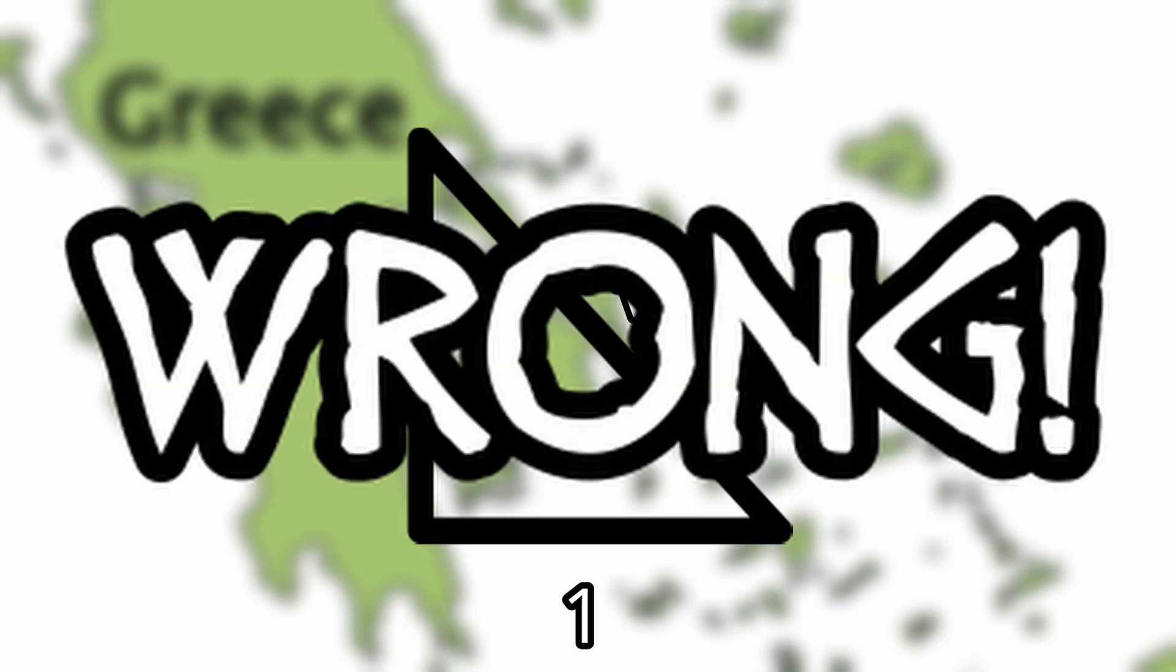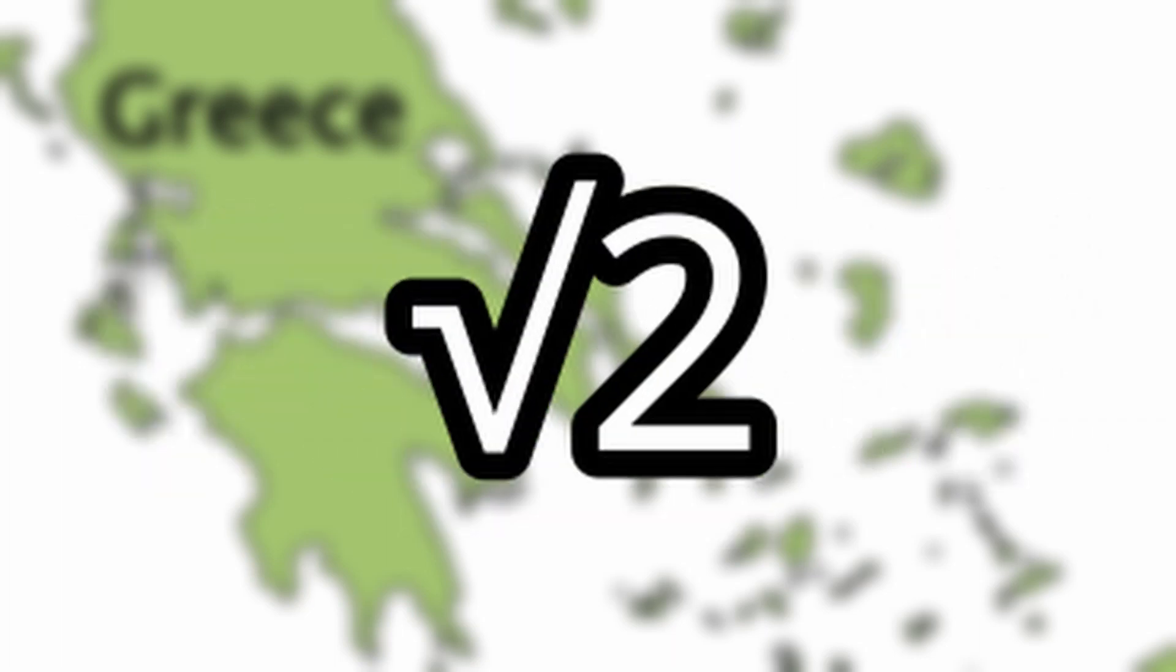Nothing scary, right? Wrong. The issue is that you can't display root two as a fraction. It is irrational, and the Pythagoreans didn't think that was possible.